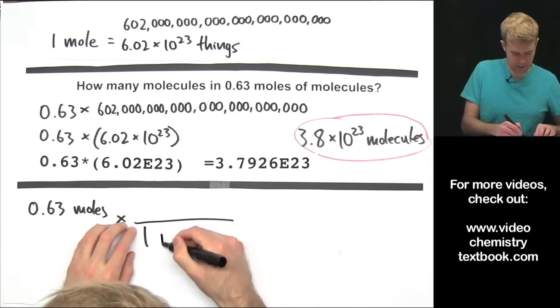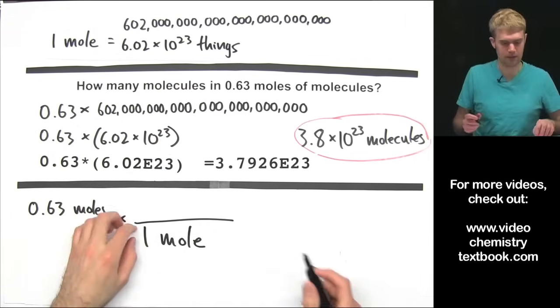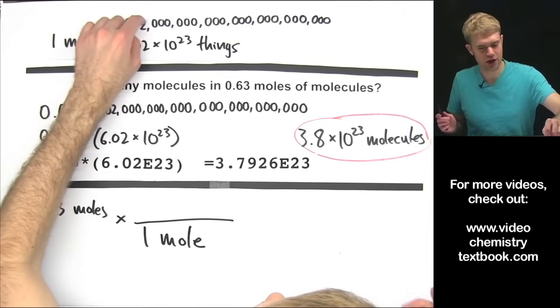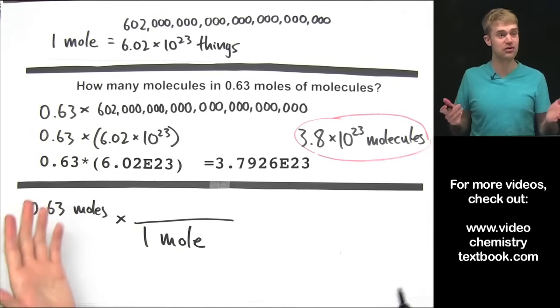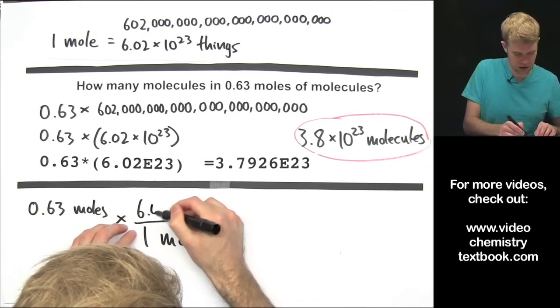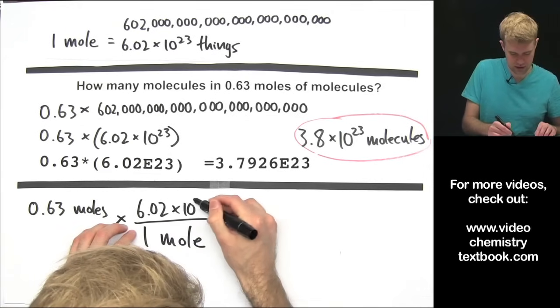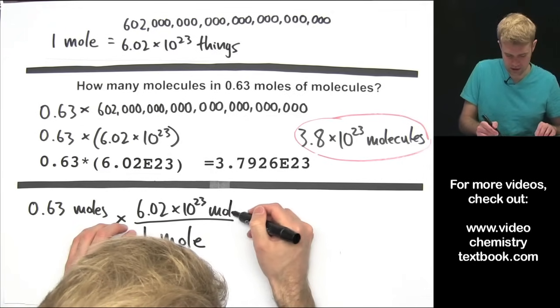We're going to put moles on the bottom. I'm going to do 1 mole here and we're talking about 602 hexillion things. So I'm going to do 6.02 times 10 to the 23rd molecules up here.